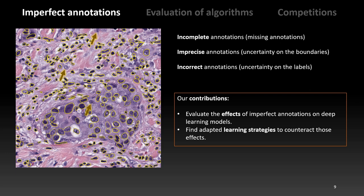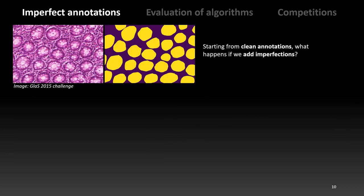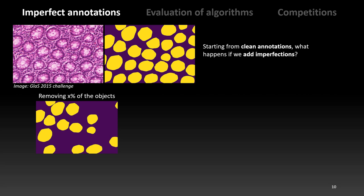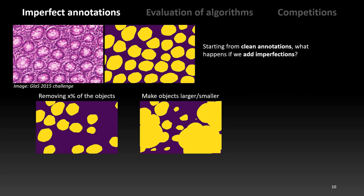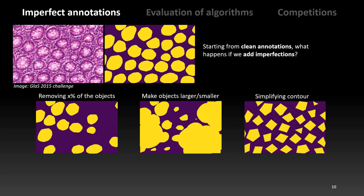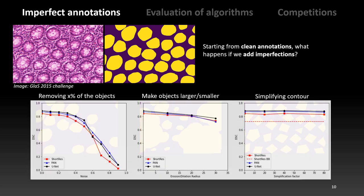We studied the effects of imperfect annotations, as well as some learning strategies that can be used to counteract those effects. To do that, we started with some very good clean datasets, such as this one from a colorectal cancer gland segmentation challenge. The original annotations are as close to pixel-perfect as we can get in a digital pathology dataset. So what we did was to artificially add imperfections. We simulated different types. For missing annotations, we randomly removed annotated objects from the datasets. We randomly deformed the shape of the objects by making them smaller or larger. And we simplified the contours, simulating a quicker annotation method where, instead of precisely going around the contour, the expert would just have selected a few points to give us a polygonal approximation.